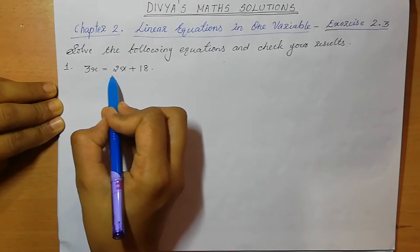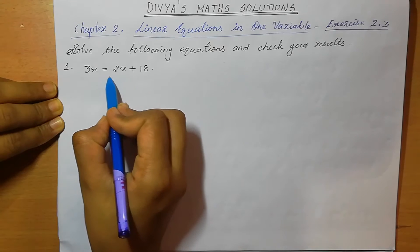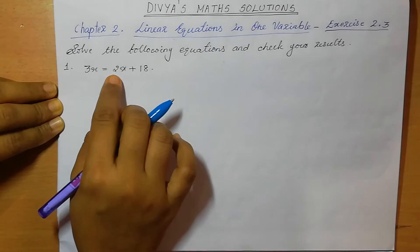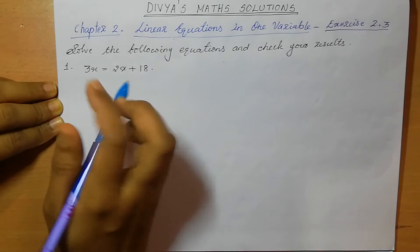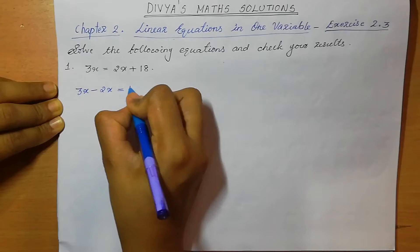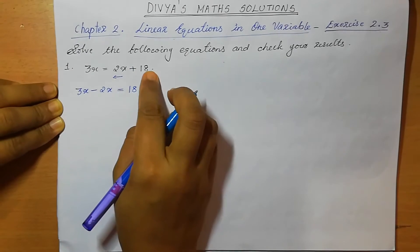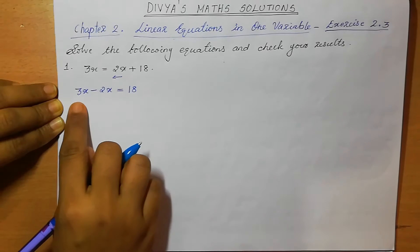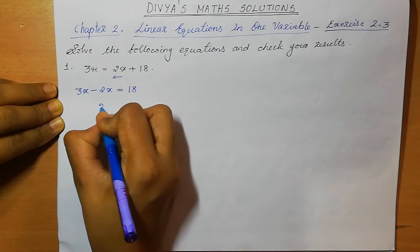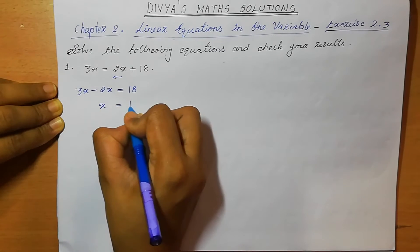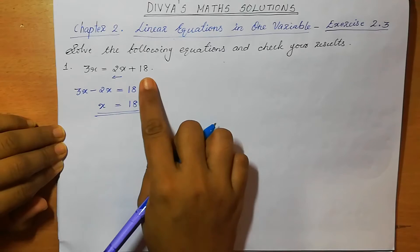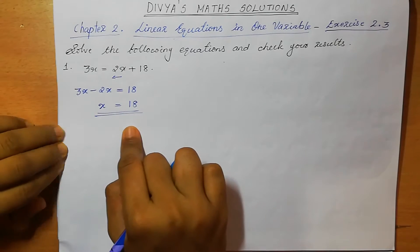So this one we can write: 3x = 2x + 18. We shift 2x to the left-hand side, so plus 2x becomes minus 2x. Therefore 3x minus 2x = 18. Both terms are in the same variable, so 3 minus 2 is 1, giving 1x = 18. From here we got the value of x equal to 18.